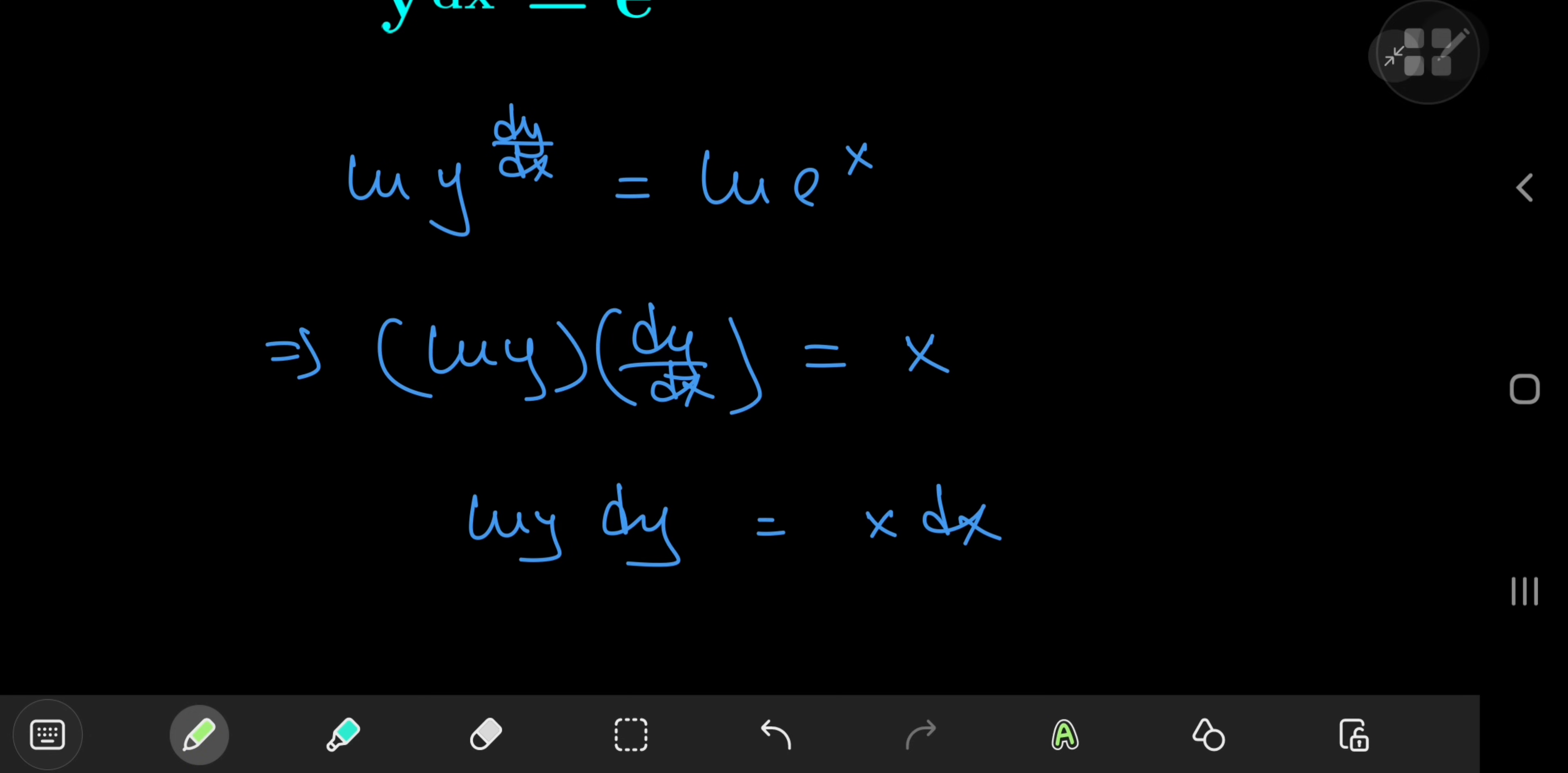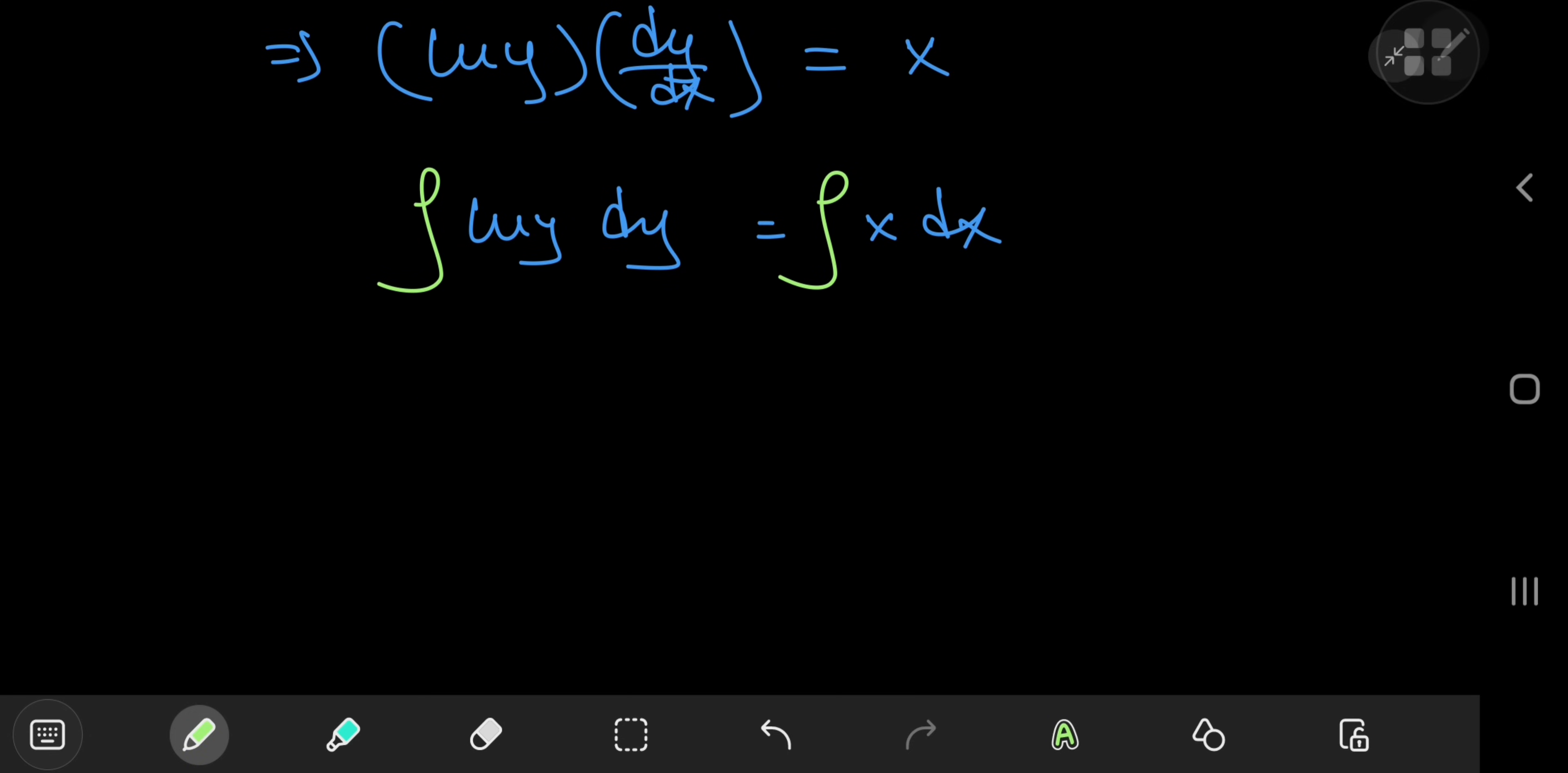Now integrating with respect to the variables on either side, on the left hand side I have using integration by parts: y times log y minus the integral of y times the derivative of log y which is 1/y dy.